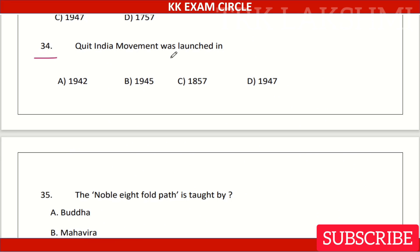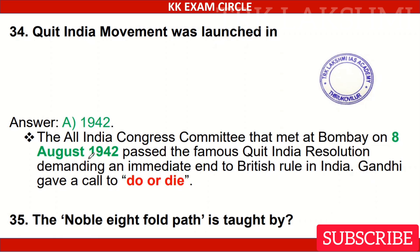Question 4. The Quit India Movement was launched in — Option A: 1942. Option B: 1945. Option C: 1857. Option D: 1947. Answer: Option A, 1942.